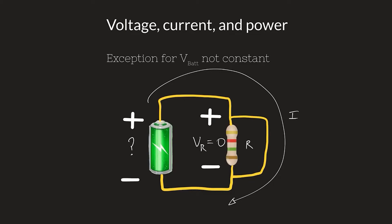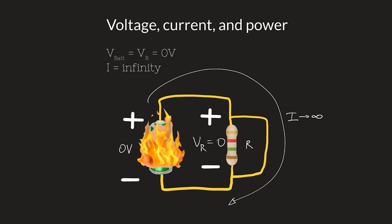Here's one exception where even an ideal battery can't hold its designed voltage: when it's shorted. If there's an unobstructed path — a perfect conductor — from the high potential side to the low potential side, it's shorting across the resistor. The voltage is zero and essentially infinite current is pulled out of the battery. It will get hot. If you've ever connected the terminals of a 9-volt battery, after a few minutes it gets hot and can cause fires.